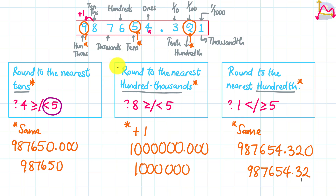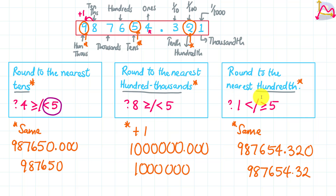This is how rounding is done for numbers with decimals — whether it's to the nearest tens, nearest hundred thousands, nearest hundredth, or any other place value. I hope you found this really informative. Stay smart as always and believe in yourselves.